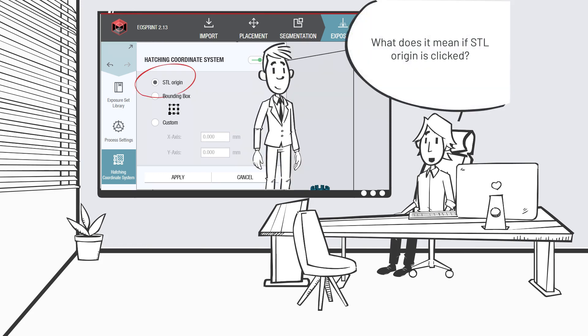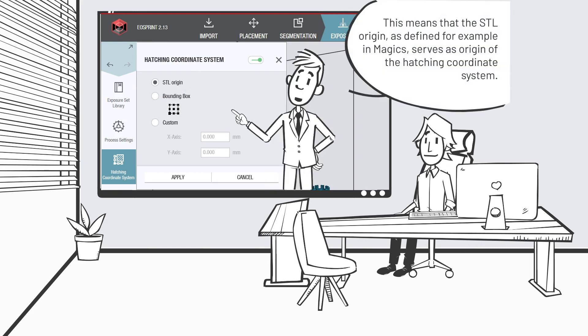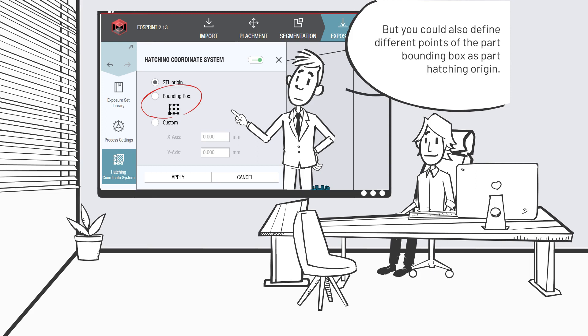What does it mean if STL origin is clicked? This means that the STL origin, as defined for example in Magix, serves as origin of the hatching coordinate system. But you could also define different points of the part bounding box as part hatching origin.